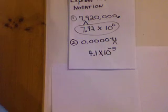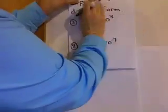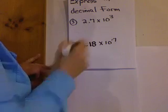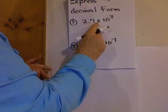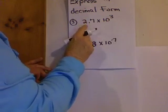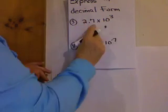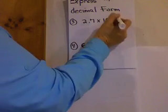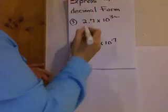Alright, let's do two more types of problems. What if I have this question expressed in decimal form? Alright, 2.7 times 10 to the 3rd. That means I have to make 2.7 a larger number by moving the decimal point how many places? See that 3? That's how many places.